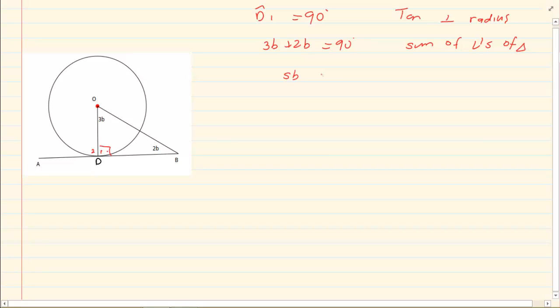That means 5B is equal to 90 degrees. B is equal to 18 degrees.